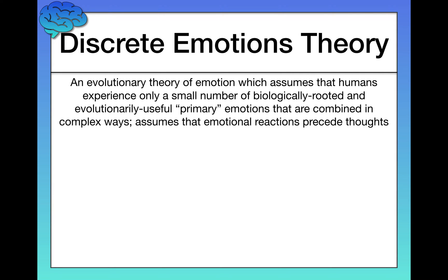The discrete emotions theory is an evolutionary theory of emotion, which assumes that humans experience only a small number of biologically rooted and evolutionarily useful primary emotions that are then combined in complex ways to produce the entire range of human emotion. Importantly, the discrete emotions theory assumes that emotional reactions precede thoughts, which is again why it qualifies as an evolutionary theory of emotion.